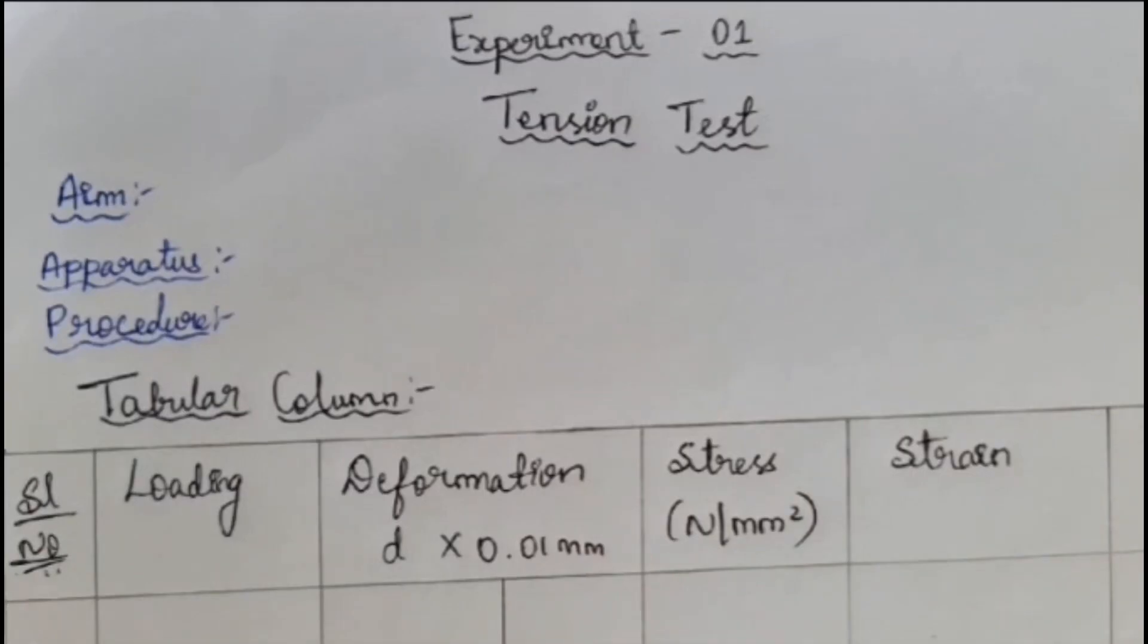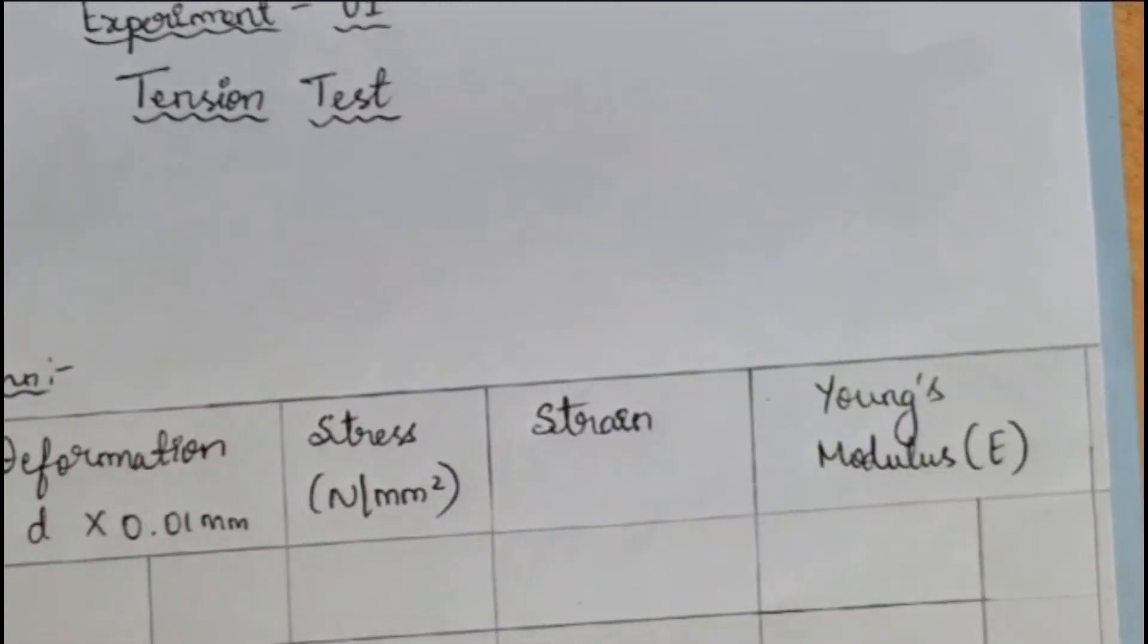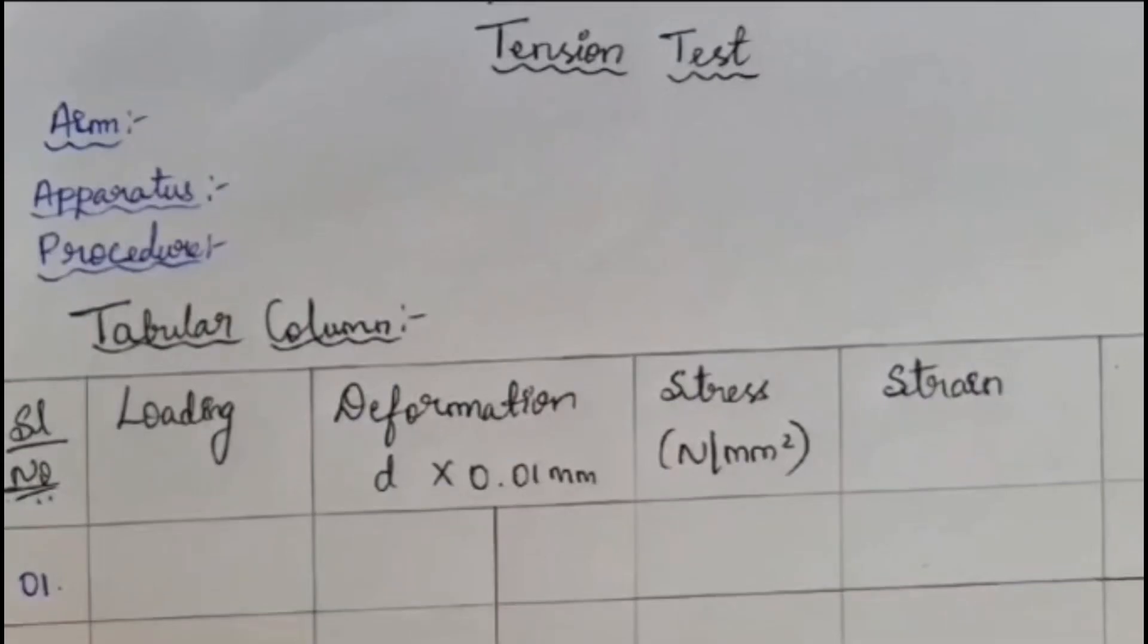In the tabular column consists of Serial Number, Loading, Deformation, Stress, Strain, and Young's Modulus. That is E, Modulus of Elasticity.